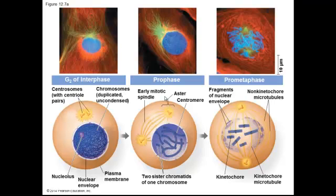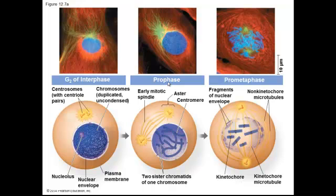Now let's look at the different phases of mitosis, starting with the end of interphase. Keep in mind, interphase is not part of mitosis — it's part of the cell cycle but not mitosis. At this point all chromosomes have been duplicated, but you can't distinguish them because they have not condensed yet. When the cell enters the first stage of mitosis, called prophase, the chromosomes condense into visible chromosomes, and the early mitotic spindle begins to form as the centrosomes migrate toward opposite ends of the cell.